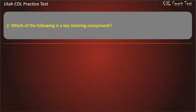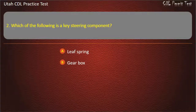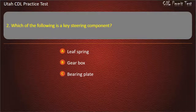Question 2. Which of the following is the key steering component? Leaf spring. Gear box. Bearing plate. Torque rod. Answer: Gear box.